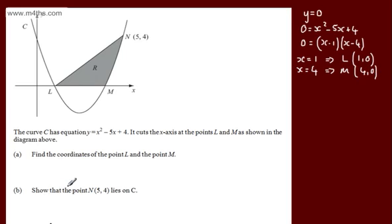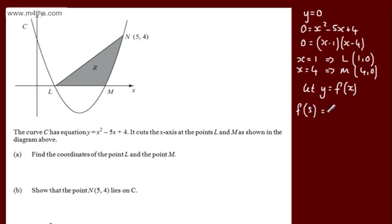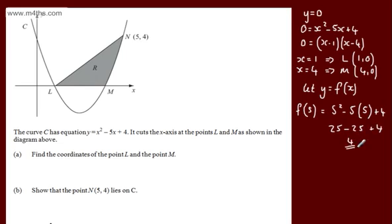In part B, we need to show that the point N lies on C. What we do is let y equal f(x) and find f(5). Simply substituting in, we get 5 squared minus 5 lots of 5 plus 4, which is 25 minus 25 plus 4, giving us a y-coordinate of 4, as required.